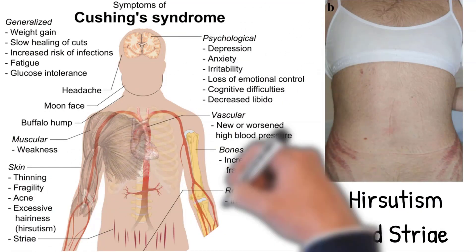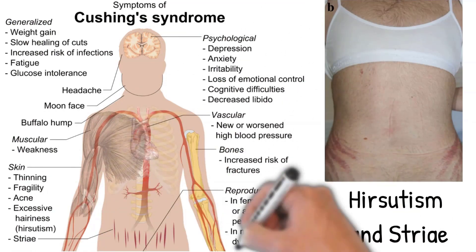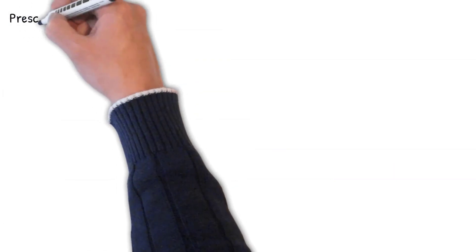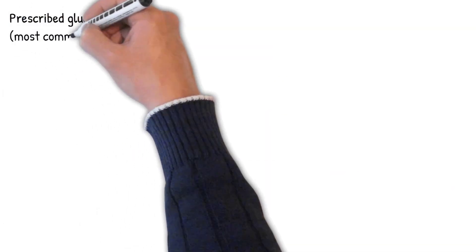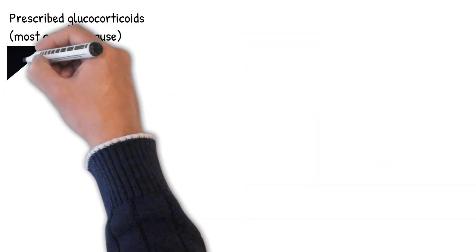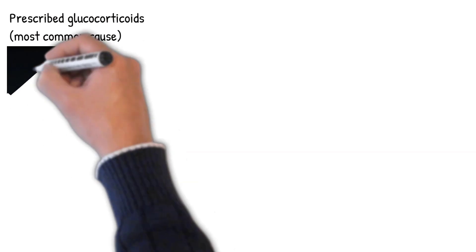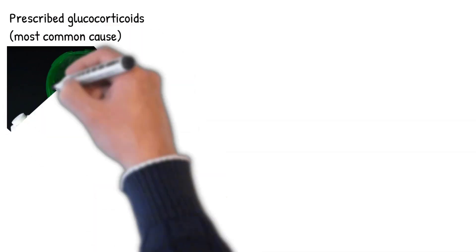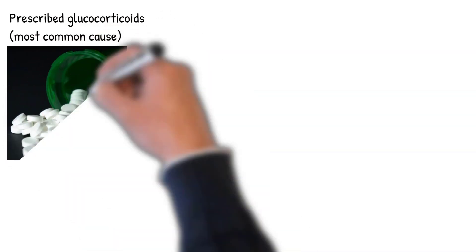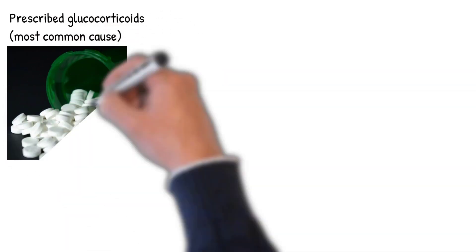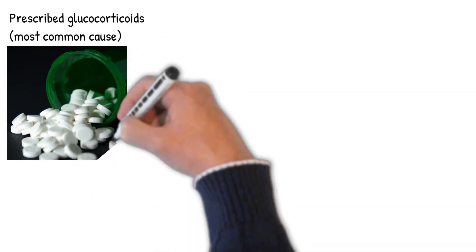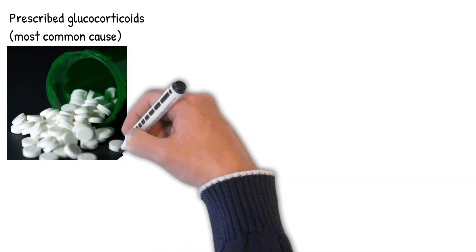Osteoporosis occurs because hypercortisolism causes increased breakdown of bone. Cushing's syndrome may result from any cause of increased glucocorticoid levels, whether due to medication or internal processes. The most common cause is the use of prescribed glucocorticoids to treat other diseases, known as iatrogenic Cushing's syndrome.